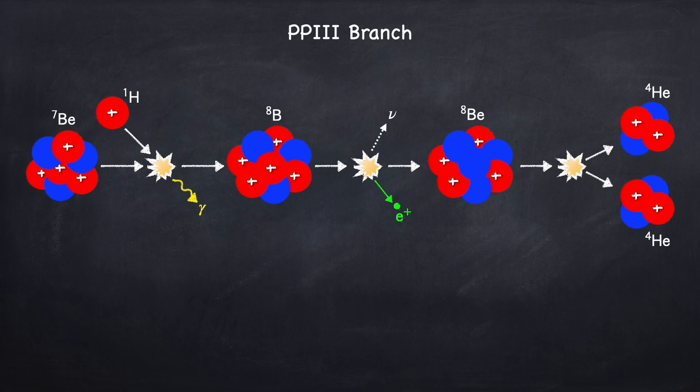Now between these three branches, even though they're all going from converting four protons into one alpha particle, they don't release the same amount of energy. Or better, the energy released in the neutrinos is different, so they don't release the same amount of useful energy, we can say. Meaning that the different branches lose different amounts of energy to the neutrinos. Also, they don't occur at the same rates. And which one will be the dominant branch will depend on the exact temperature and composition of the star. Typically, the dominant branch will either be the first branch or the second branch.